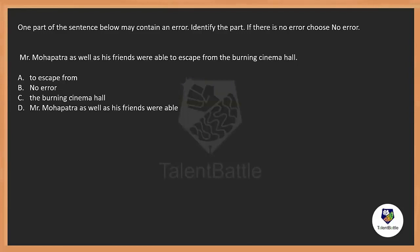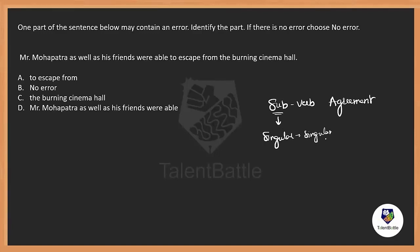If you say no error, I'm sorry, you're wrong. Because there is an error in the sentence. Most of you are definitely checking with the subject-verb agreement. Whenever I have a singular subject, I need to have a singular verb only. And whenever we have a plural subject, we should go with a plural verb. That is why basically 'he was' or 'they were', etc.